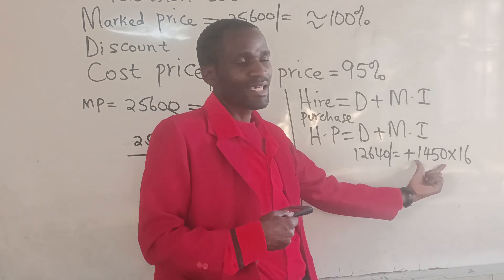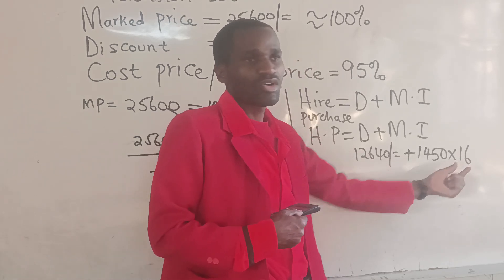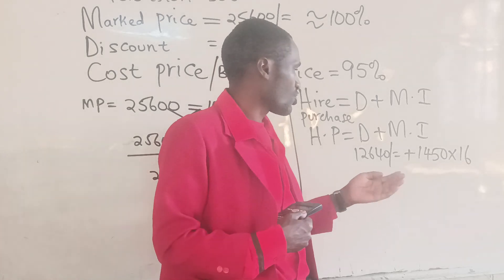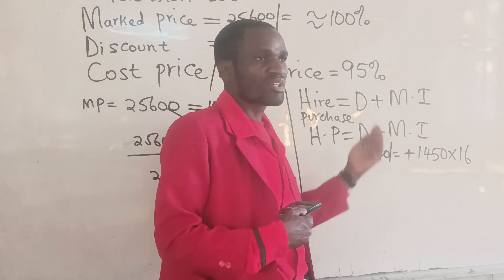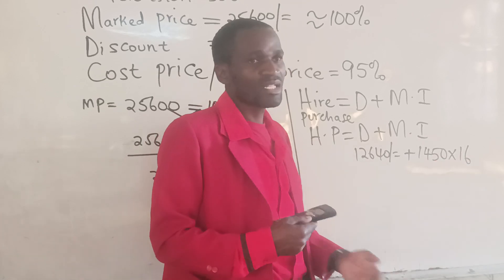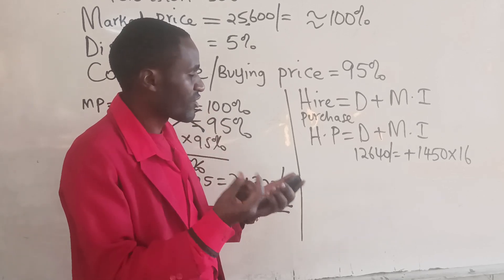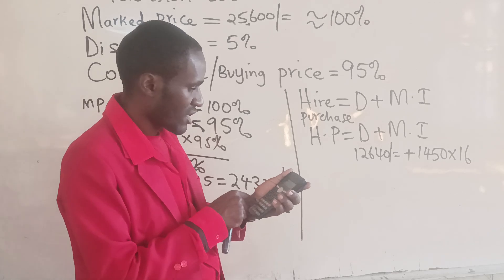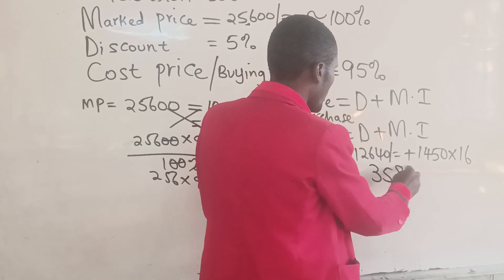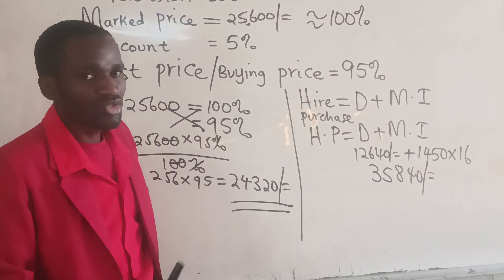Monthly installments are calculated by taking how much the person pays per month multiplied by the total number of months to clear the balance. The balance is cleared over 16 months at 1,450 Kenyan shillings per month. So: 1,450 × 16 = 23,200, plus the deposit of 12,640. The hire purchase total is therefore 35,840 Kenyan shillings.